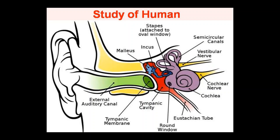To summarize, the ear has four parts: external or outer ear (with two parts — pinna/auricle and external auditory canal), tympanic membrane or ear drum, middle ear or tympanic cavity (with ossicles — malleus, incus, stapes — and the eustachian tube), and inner ear (with cochlea, vestibule, and semicircular canals).